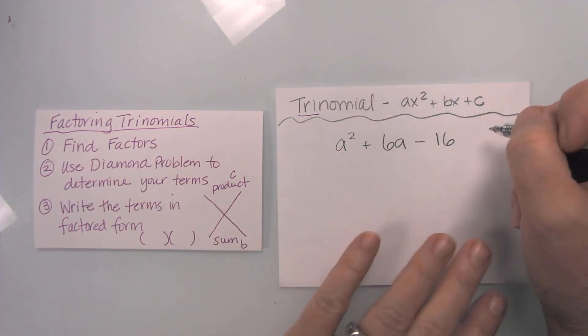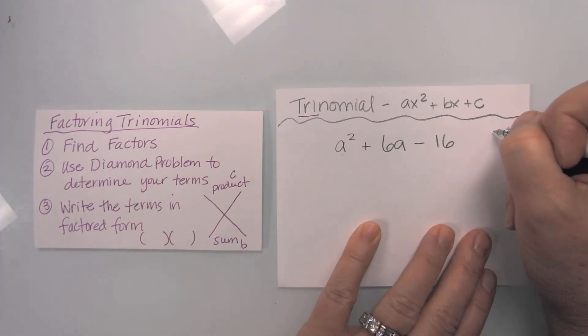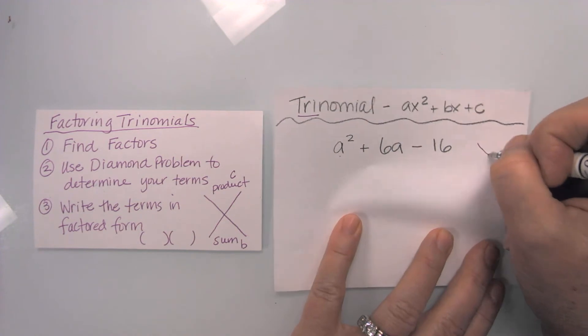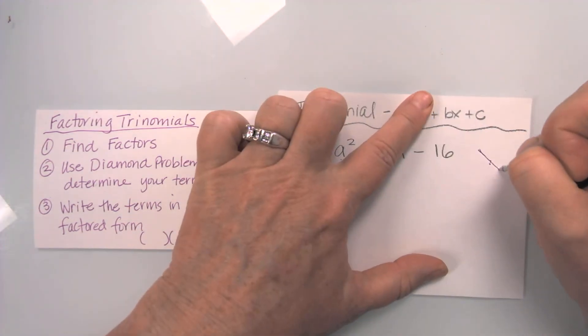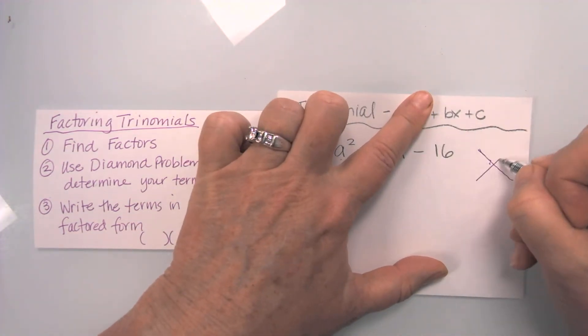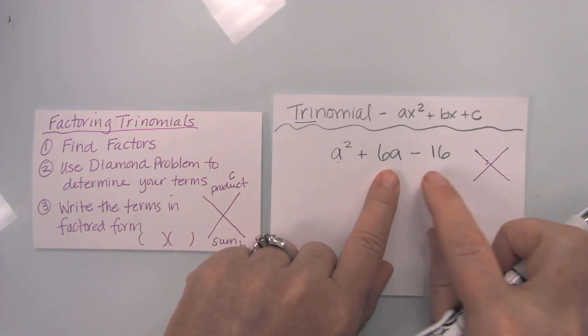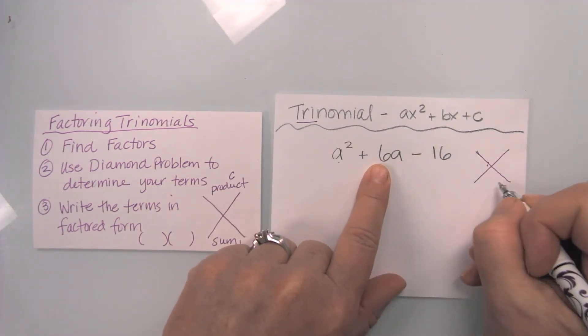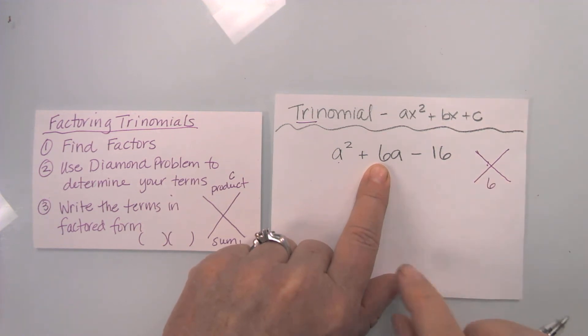So I'm going to look at what numbers six goes into. Let me do my diamond problem right there. Okay, so when I add my numbers together, my terms, they are going to equal six, a positive six.